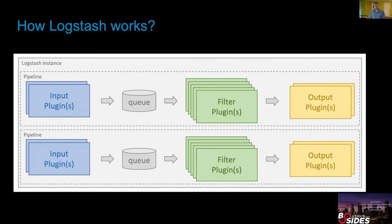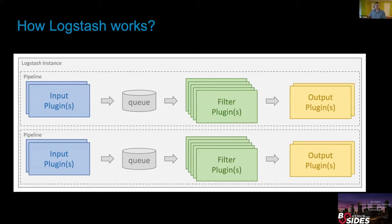Here's how Logstash works. Each Logstash pipeline has three parts. The input plugin supports multiple formats — syslog, CEF, files, and more. Once you ingest the data, you can filter it for enrichment and parsing. Finally, you can send it to a database or to another Logstash instance to chain pipelines together in a pipeline-to-pipeline architecture.